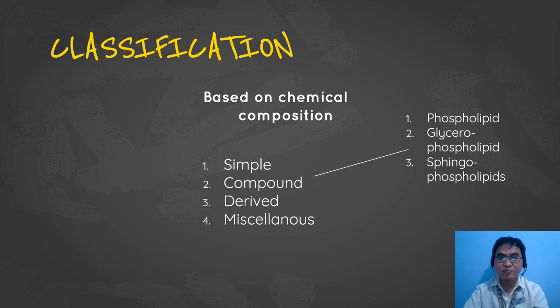The third one is the derived lipid. These lipids are obtained on hydrolysis of simple and complex lipids. An example of this classification is testosterone, progesterone, cholesterol, and steroids. Usually, these function as hormones na matatakal natin maya maya. And the last one in this category is the miscellaneous. A large number of compounds possess characteristics of lipids when we say miscellaneous. Such compounds come under this category are carotenoids, squalene, and terpenes.